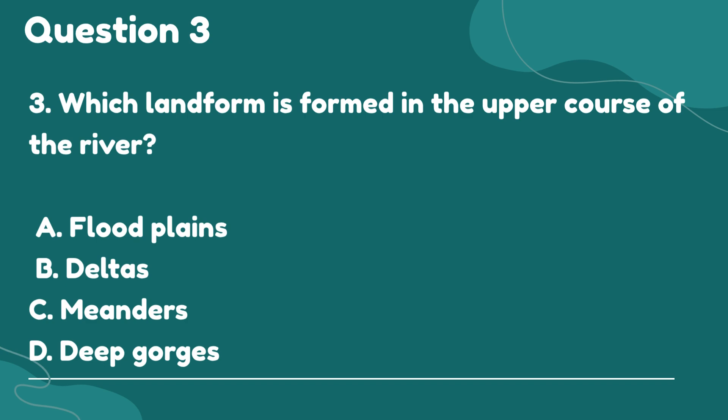Question 3. Which landform is formed in the upper course of the river? A. Flood plains. B. Deltas. C. Meanders. D. Deep gorges.